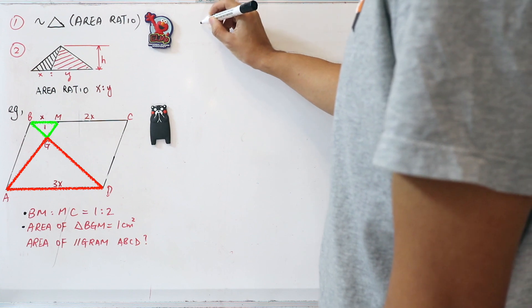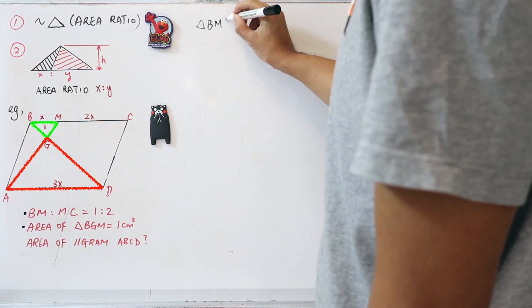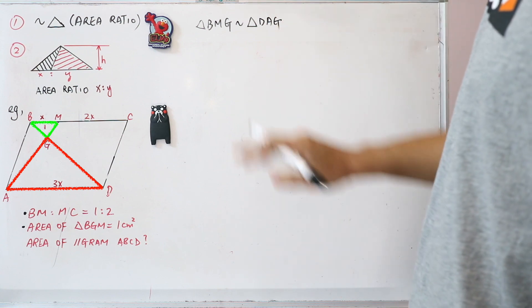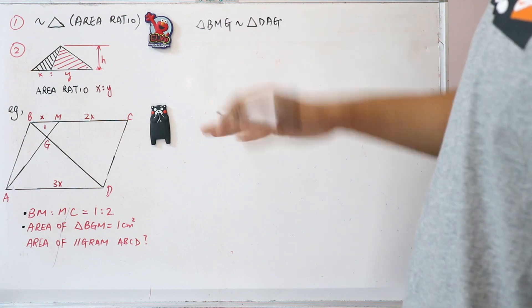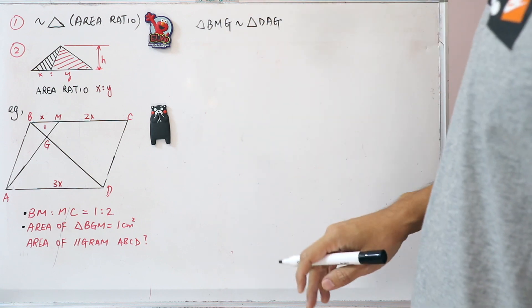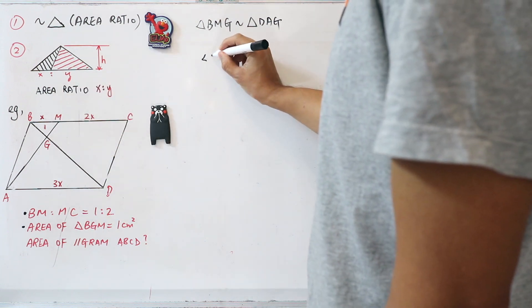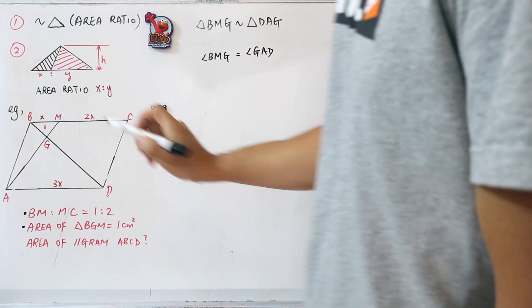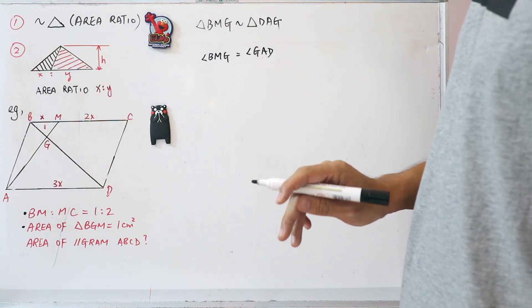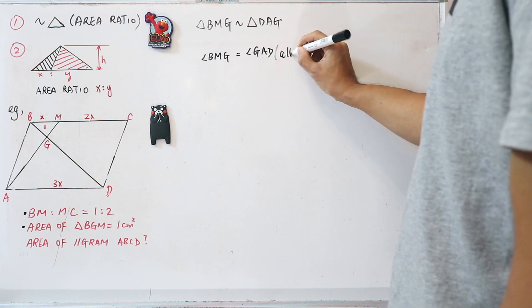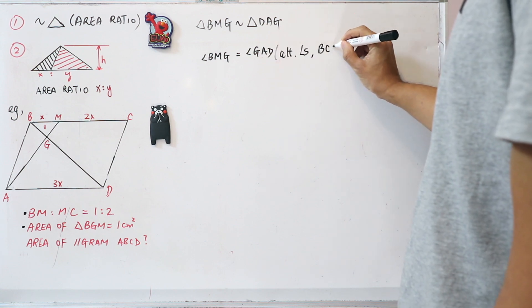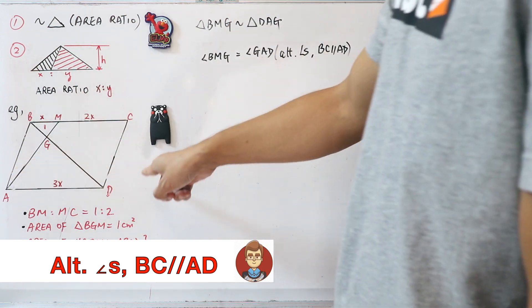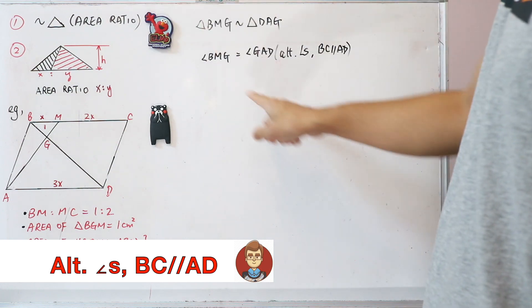Let me write it out: triangle BMG is similar to triangle DAG. To prove it — first, angle BMG is equal to angle GAD. The reason is they are alternate angles, since BC is parallel to AD. Because ABCD is a parallelogram, BC and AD are parallel, so this angle must equal that angle.